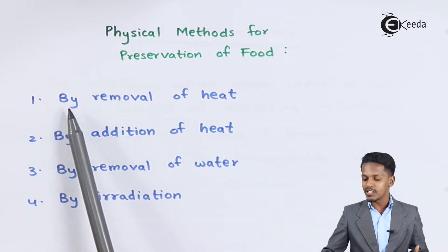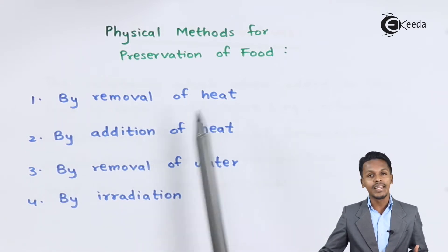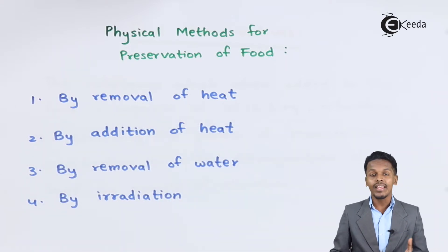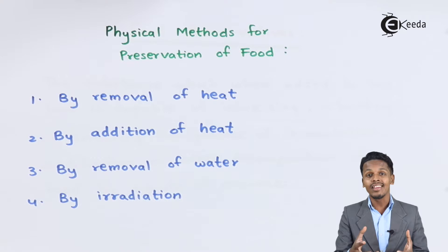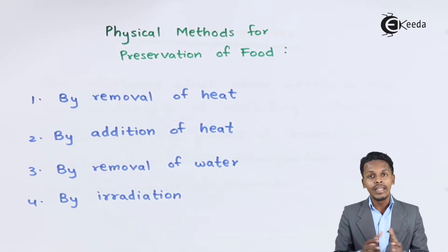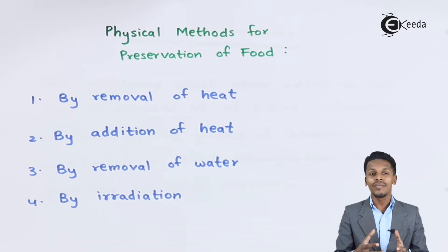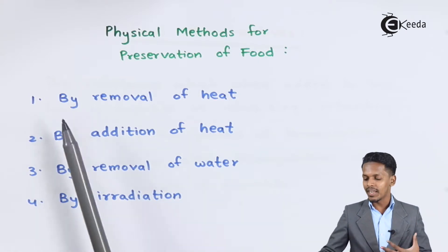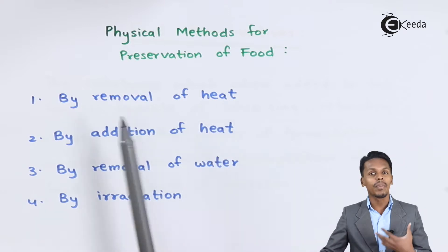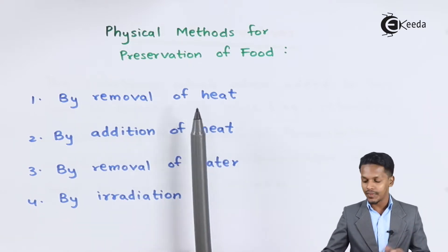The first physical method is by removal of heat. By removal of heat, or by cooling, we can preserve food. For example, we can keep the food in the refrigerator, or by adding certain reagents that cool down the food, we can retard the growth of microbes on it. That is why, by removal of heat or by cooling the food, we can preserve it.